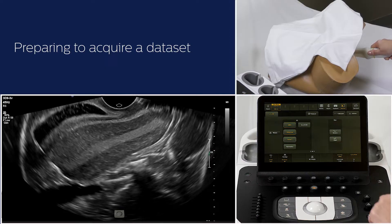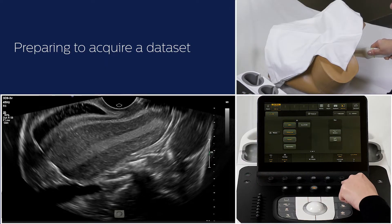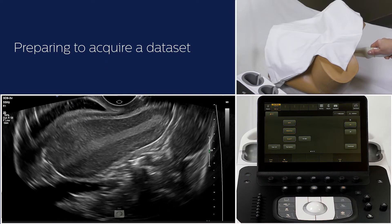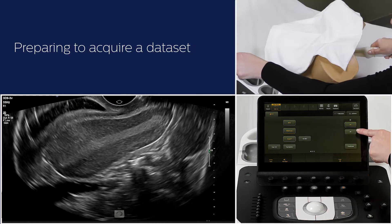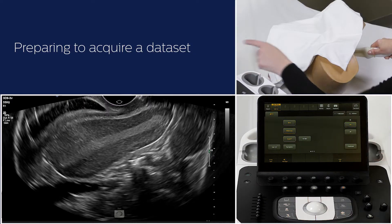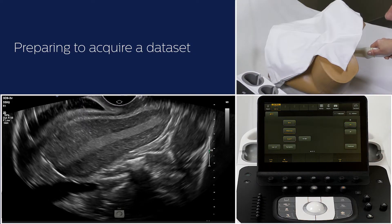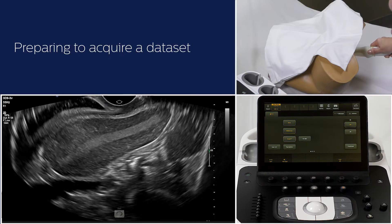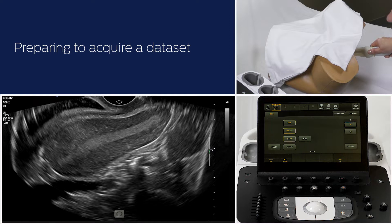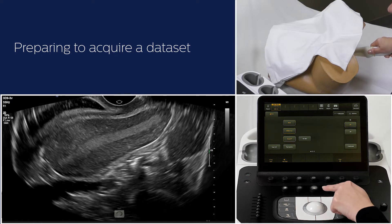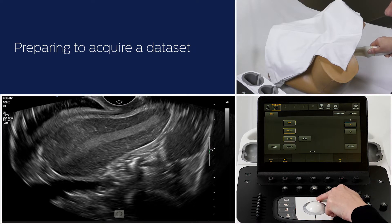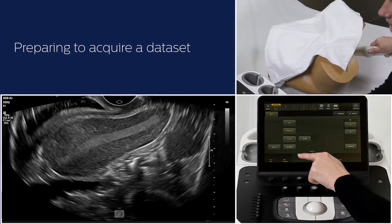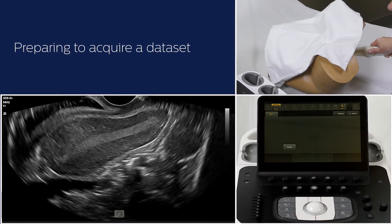Now, push the 3D knob. On the touch screen, you can select 3D or 4D. 3D is selected by default. By default, there is no region of interest or ROI box on your image. You can acquire a 3D data set immediately by pressing the middle button above the trackball or Start 3D on the touch screen.